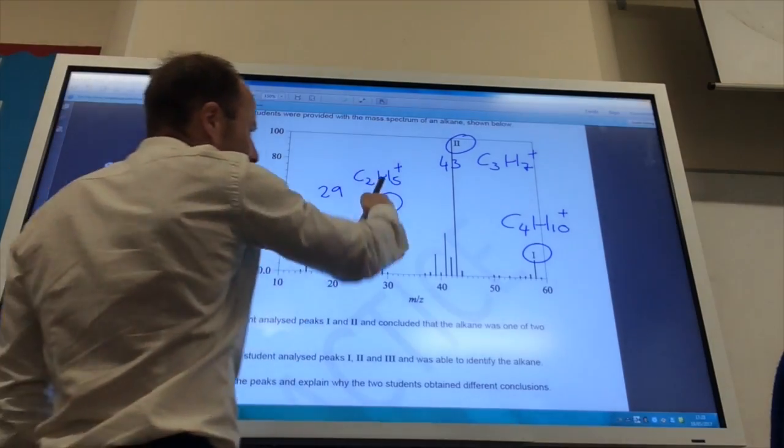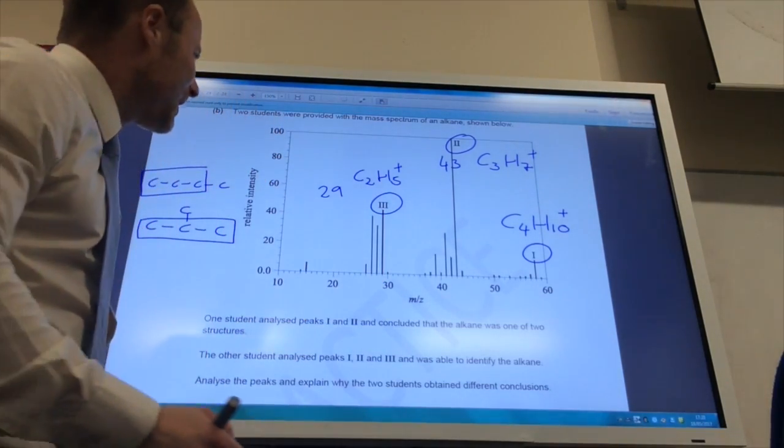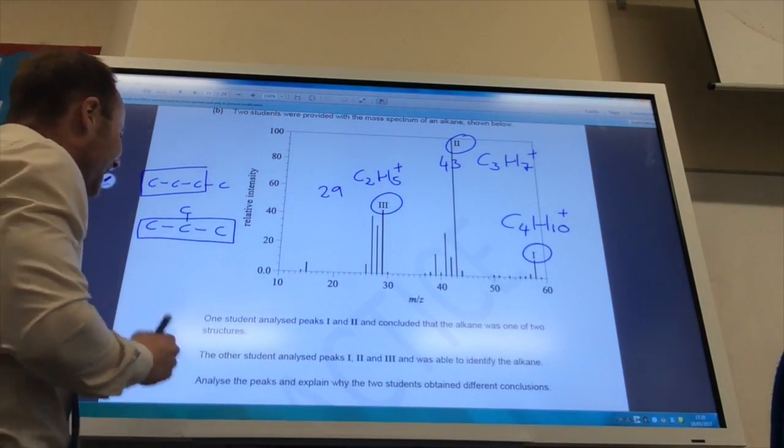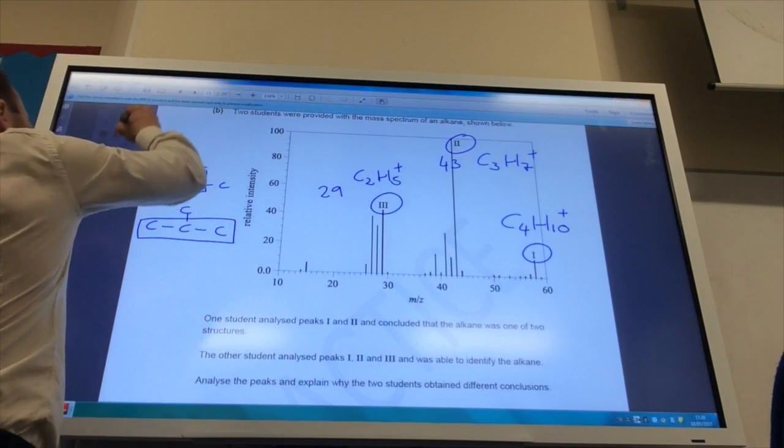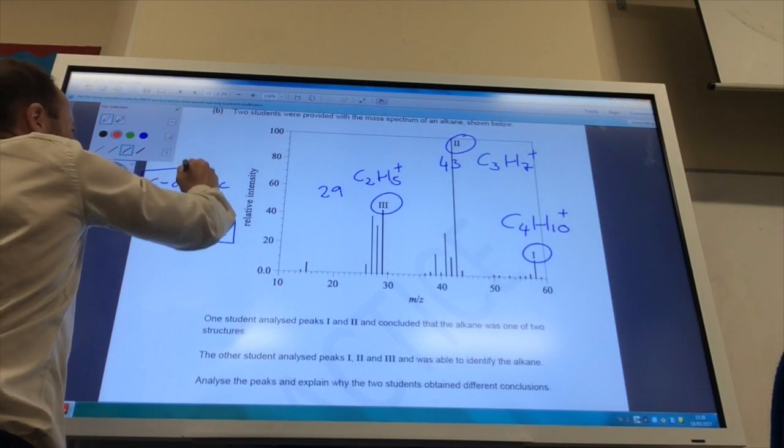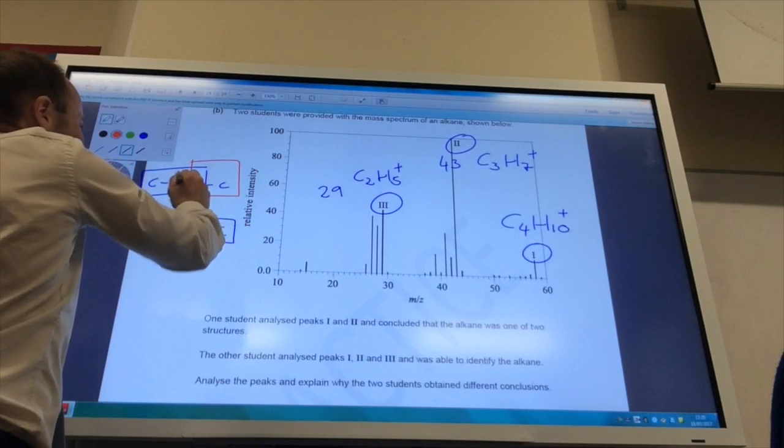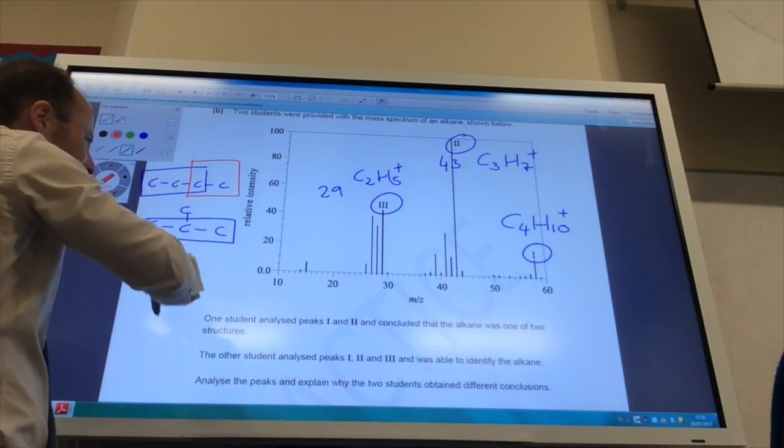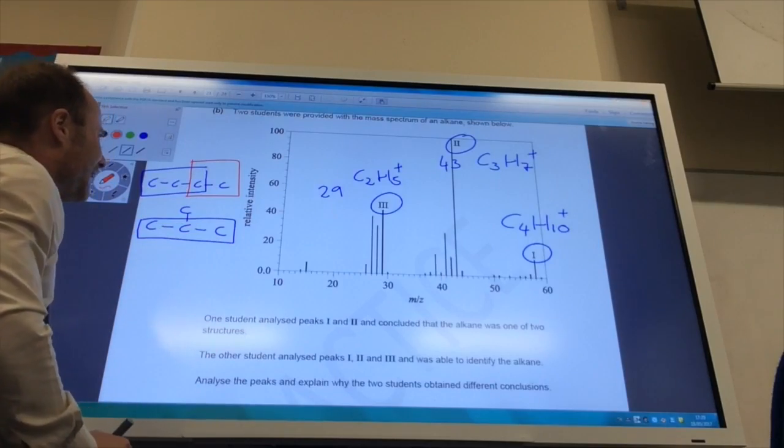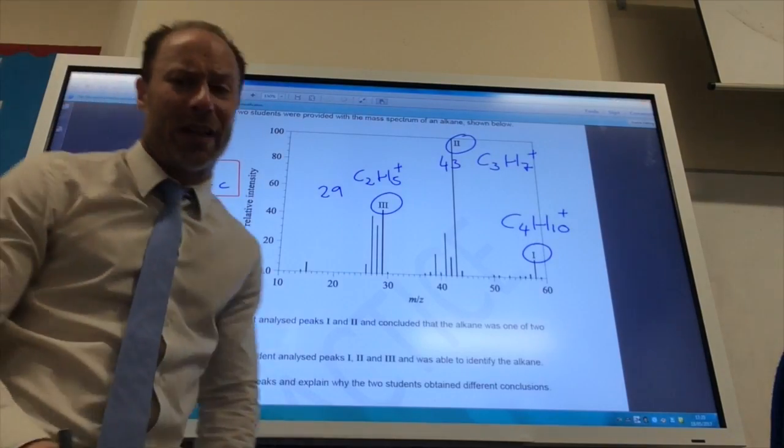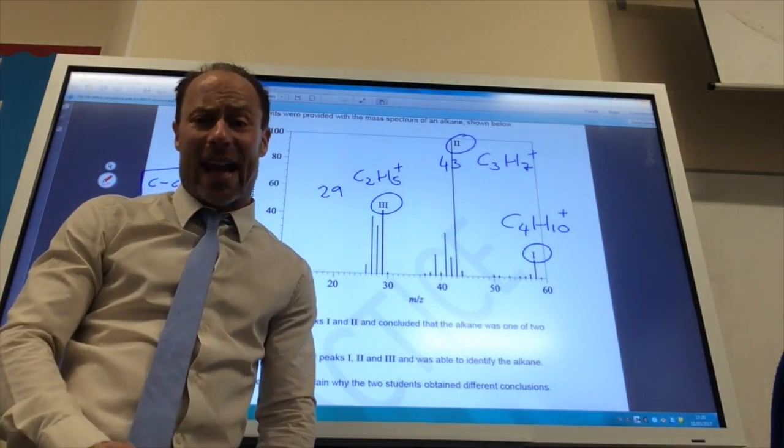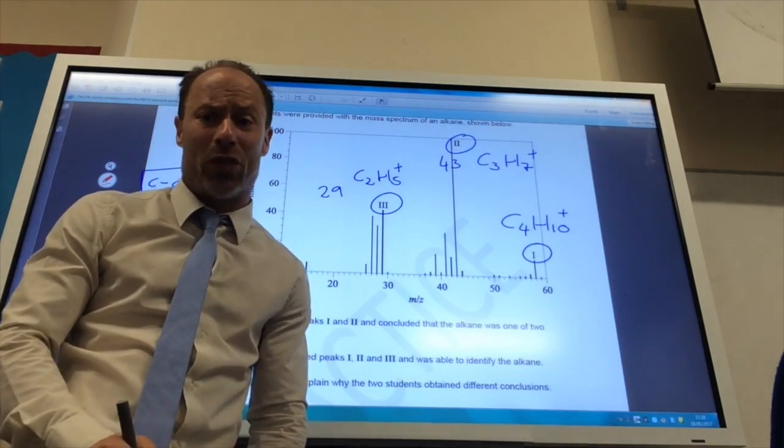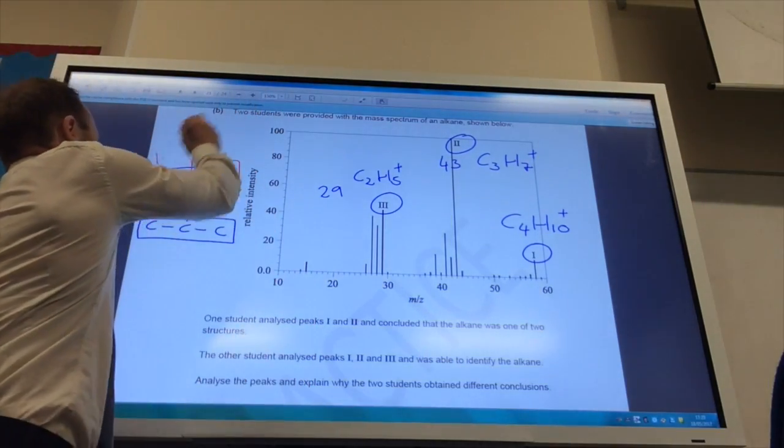However, when you bring in peak number three, which is C2H5, C2H5 can only come from this molecule, which is that fragment coming off like so. This, you can't break up to get a C2H5 fragment. And therefore, the alkane must be butane. It is this guy.